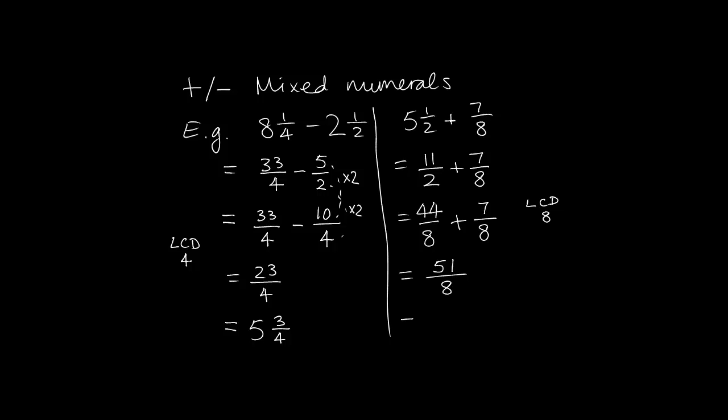Or if you wanted to, you could then change it into a mixed numeral. So 8 goes into 51 six times with a remainder of 3. Your answer is either 51 over 8 or 6 and 3 eighths. I hope you have enjoyed this session of the math tablet.